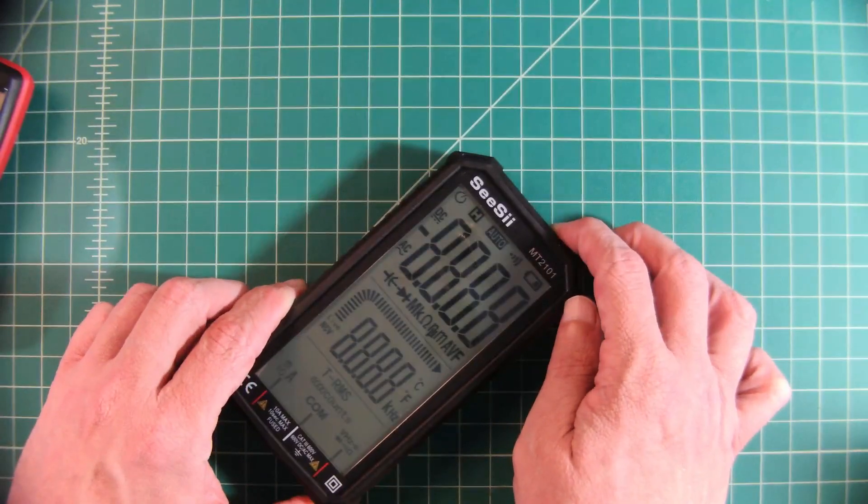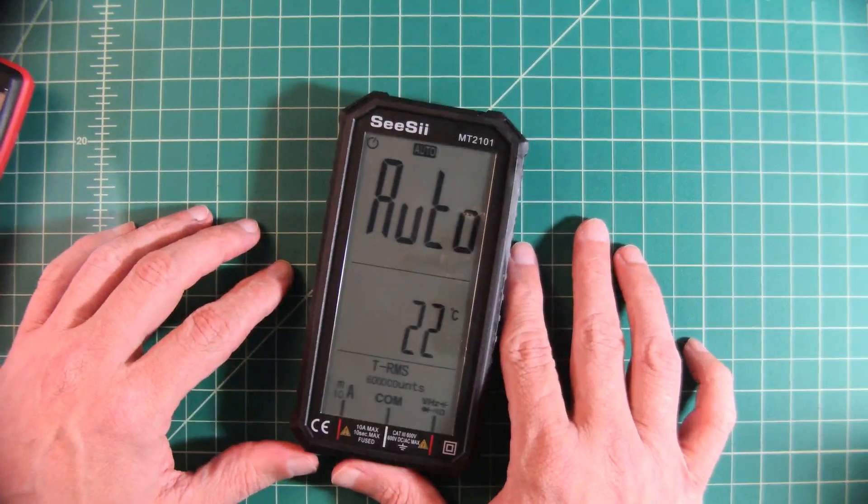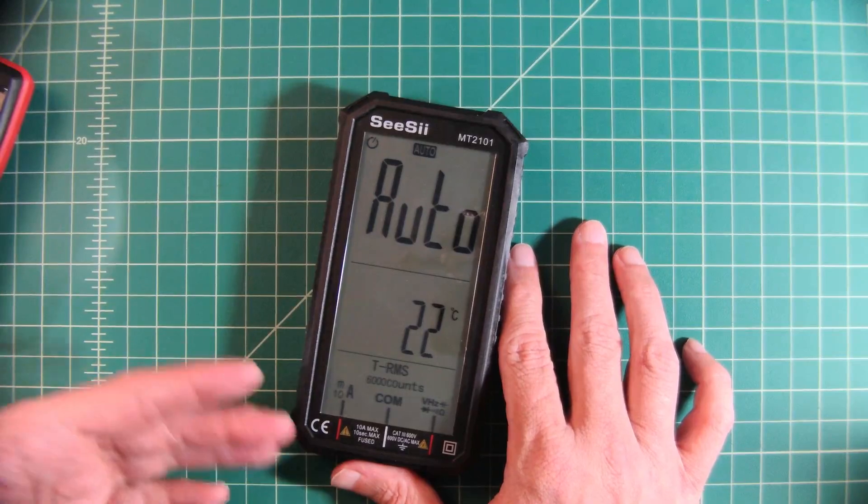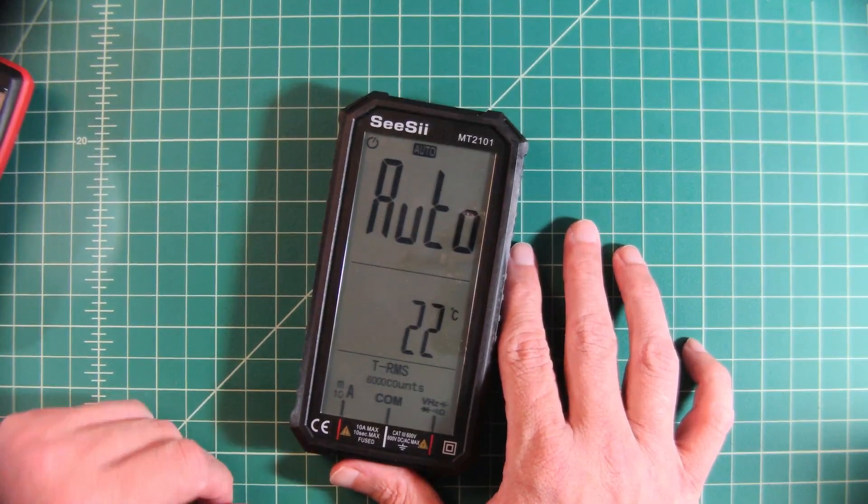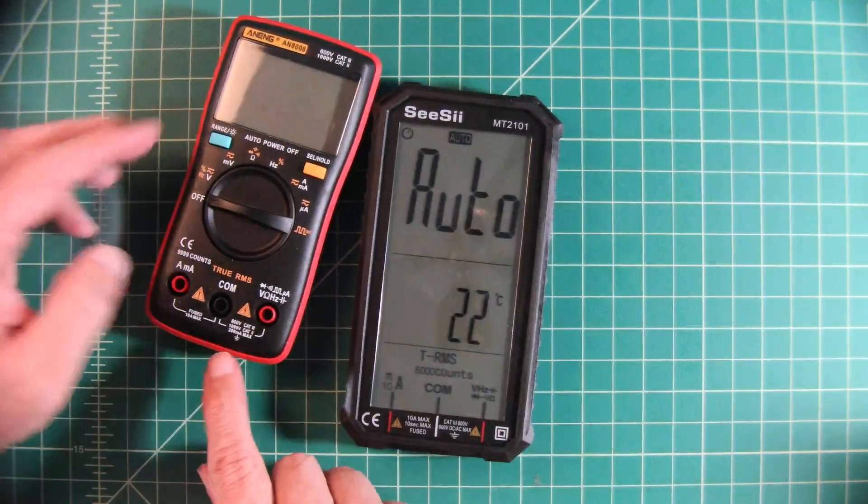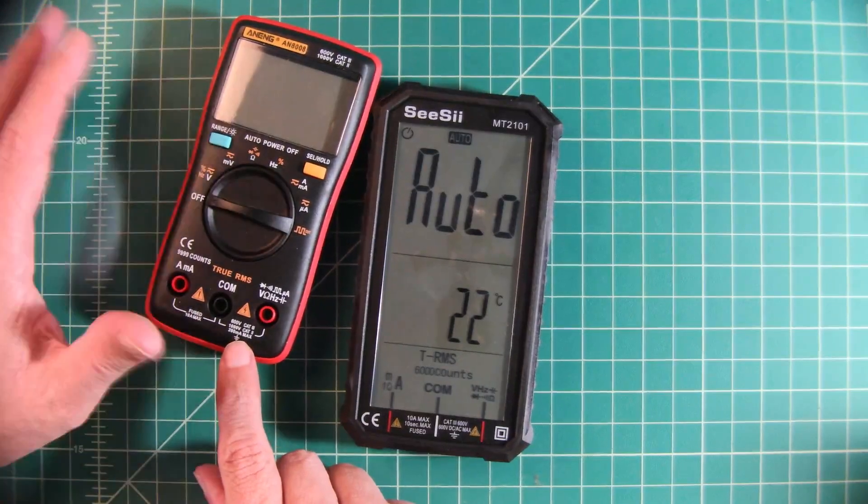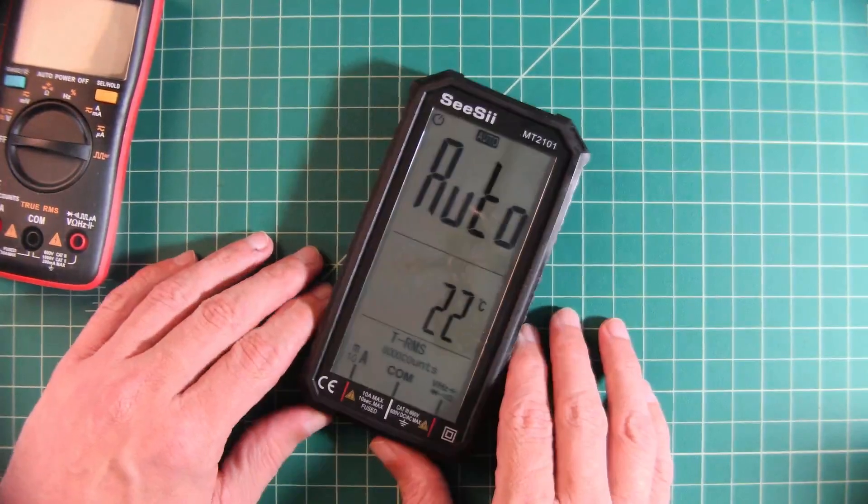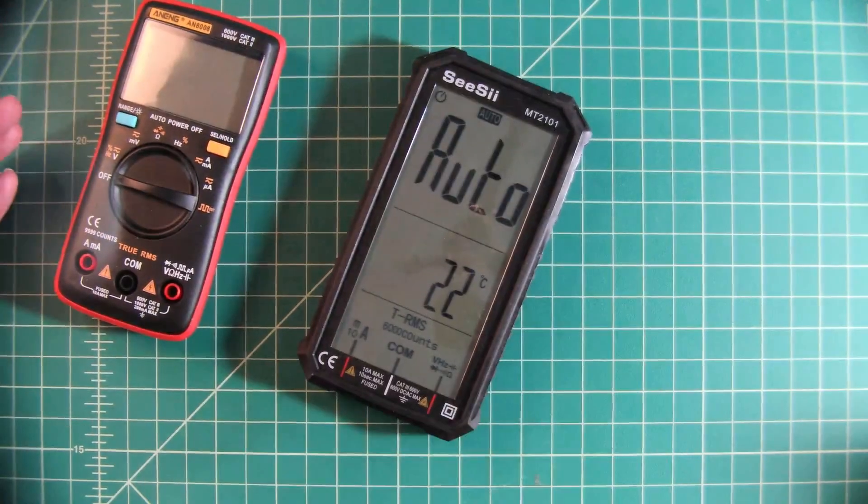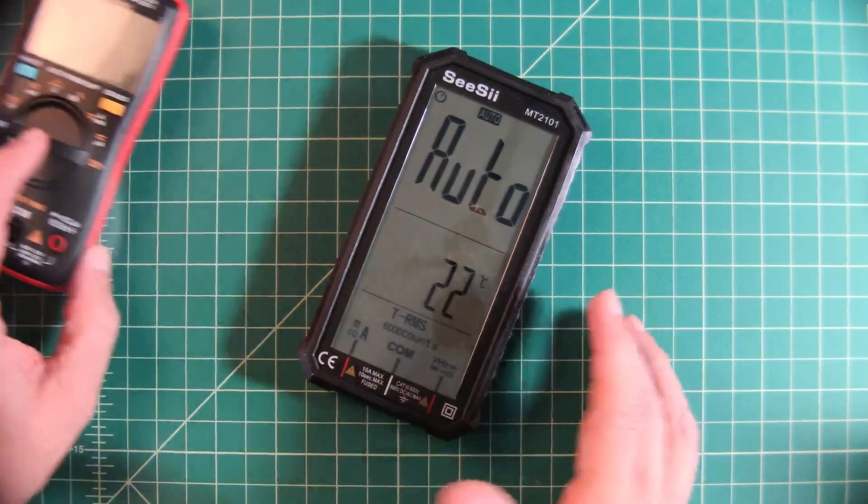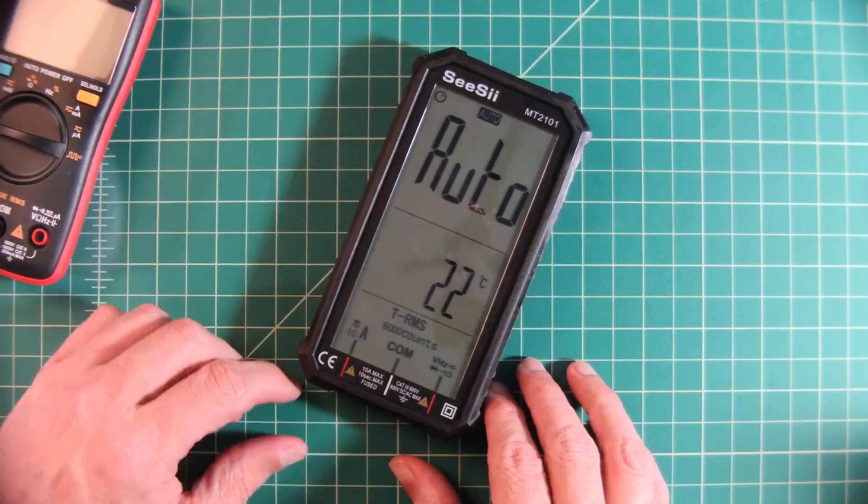So you turn this on with the power button on the top. And when it comes on you're in this auto sensing mode where it detects the things that you want to measure, which is pretty handy. It removes some of these controls that folks find confusing at times. It makes the use of the multimeter simpler. Now if you are an older school type person perhaps you like the manual controls. So that's a choice or decision that you would have to make.